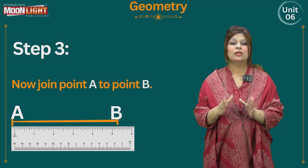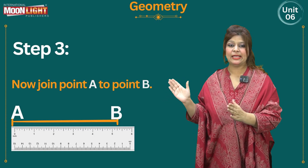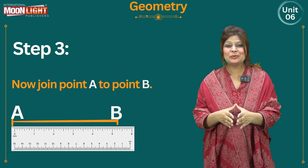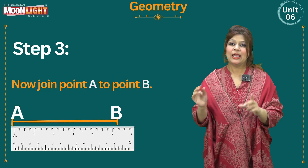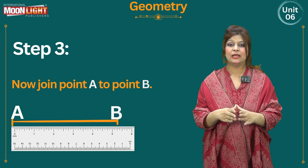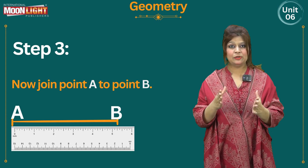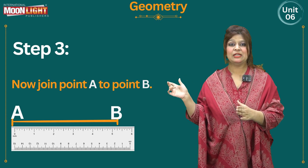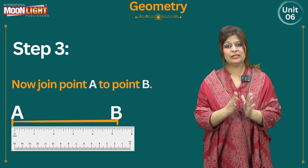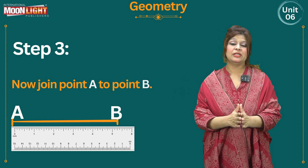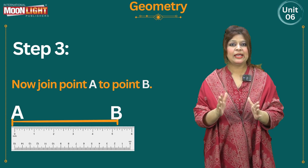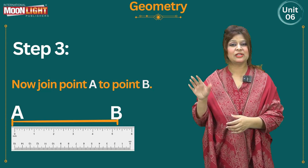In step 3, join point A to point B using the same ruler. Then remove the ruler and write capital A on one side and capital B on the other side. Also write the measurement — 4.5 cm or 4 cm 5 mm — in the middle of the line. Both notations are acceptable. Hope this is easy for you. We'll get back to you with more interesting concepts of mathematics. Take good care of yourself. Allah Hafiz.